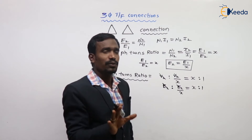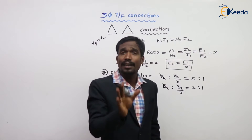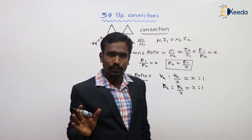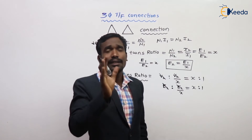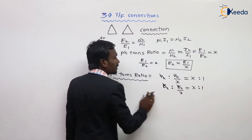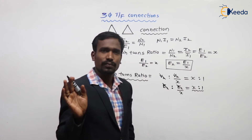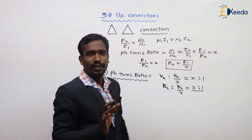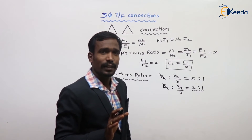Once a transformer is manufactured, the phase turns ratio is constant. But the line turns ratio changes for every configuration. For different connections, the line turns ratios change, but the phase turns ratio is constant for all configurations and all connections.